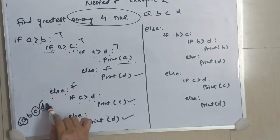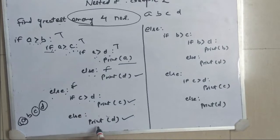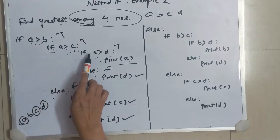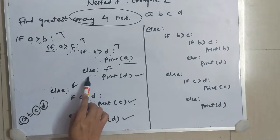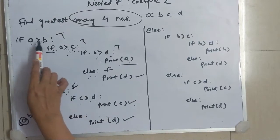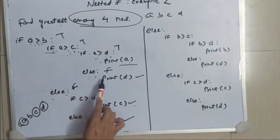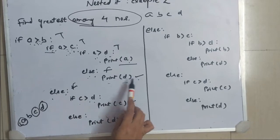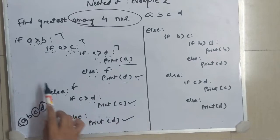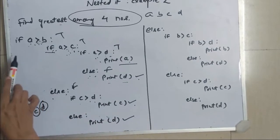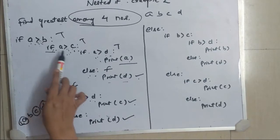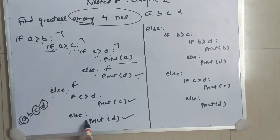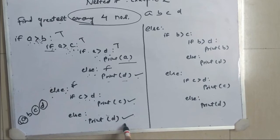And if D is greatest, it can follow either of these two ways. These two conditions will be true: A will be greater than B and C, and A will be less than D — in this way it will print D. Or there could also be a possibility that A is greater than B, but A is not greater than C and C is also not greater than D, then D will be printed.